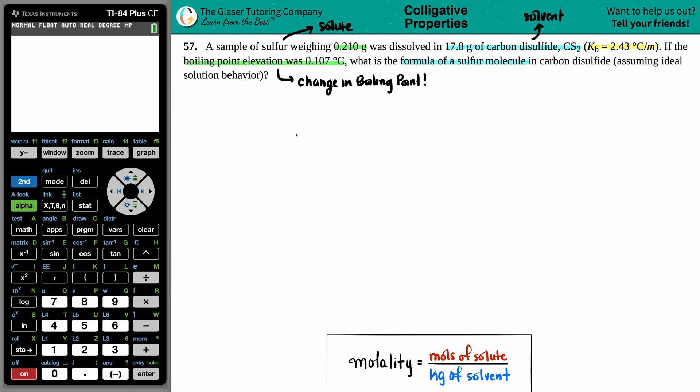We have a change in the boiling point and they give us a Kb value. This one has units to it. So this is the boiling point elevation constant and not the equilibrium constant for a base. Equilibrium constants for a base, Kb, do not have units. That's how I know the difference between the Kbs. They give me a Kb and a change in the boiling point. I'm going to use my boiling point elevation formula.